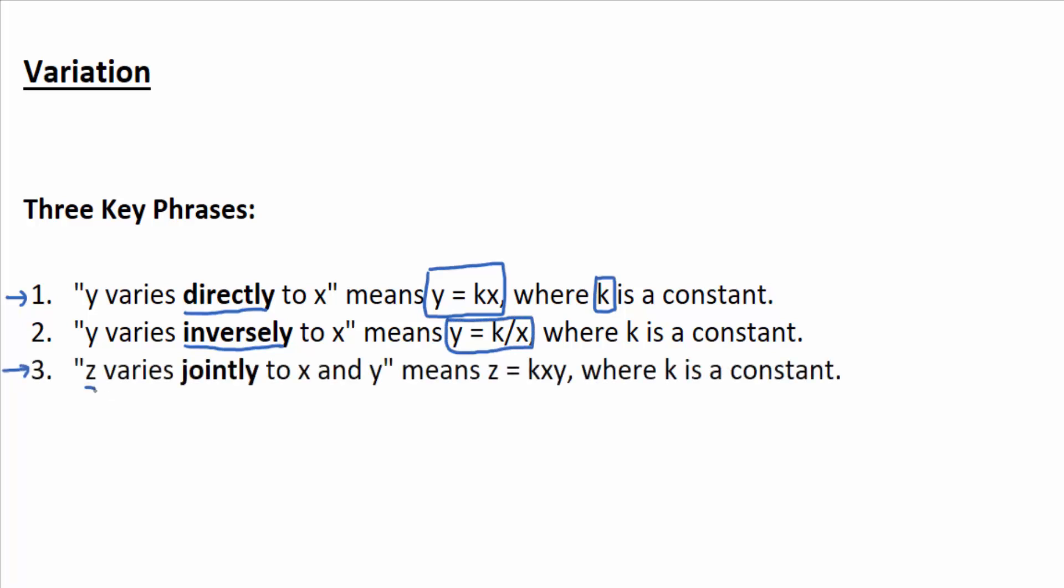If you see three variables and z varies jointly, the key word is jointly, to x and y, that means z equals k times x times y. Or z is jointly proportional to x and y, it means z equals k times x times y.